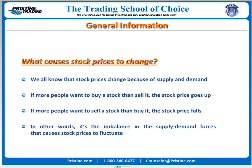We all know that stock prices change because of supply and demand. If more people want to buy a stock than sell it, the stock price should go up. If more people want to sell a stock than buy it, the stock price should fall. In other words, it's the imbalance in the supply-demand forces that causes stock prices to fluctuate.